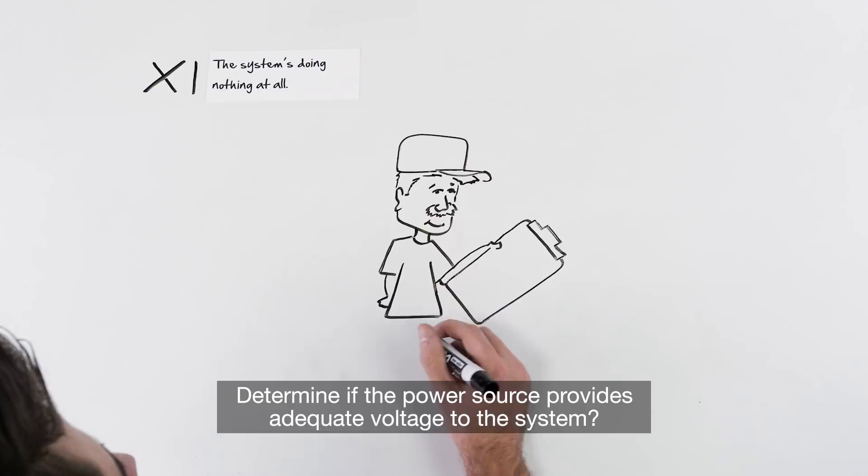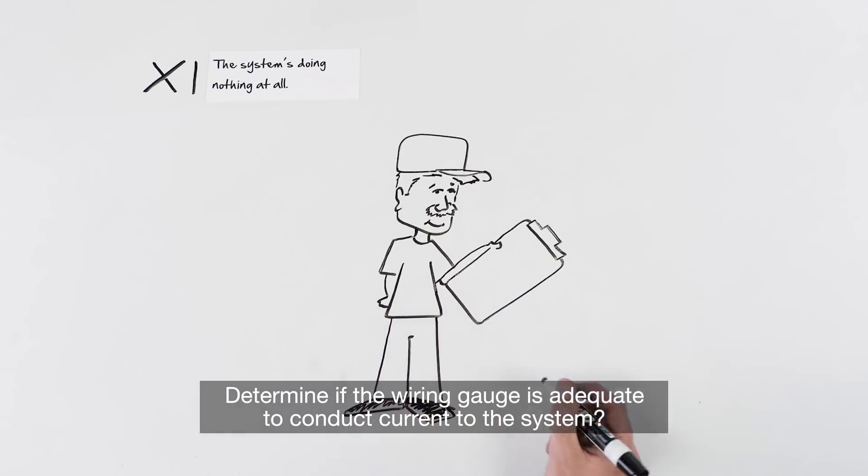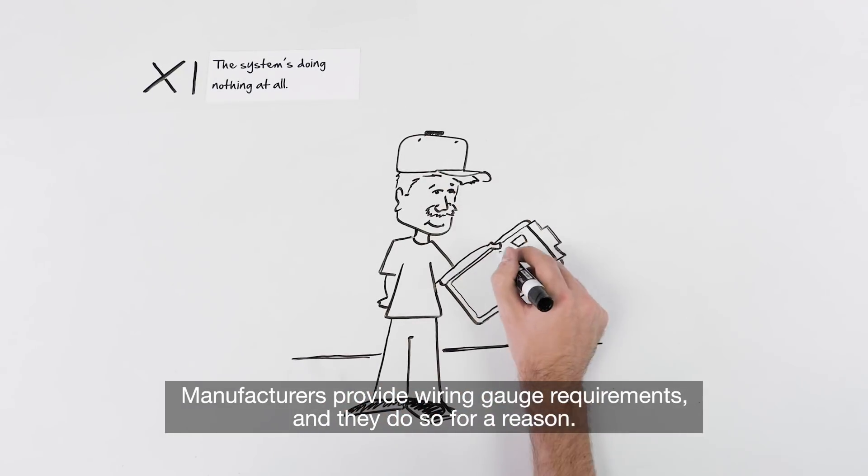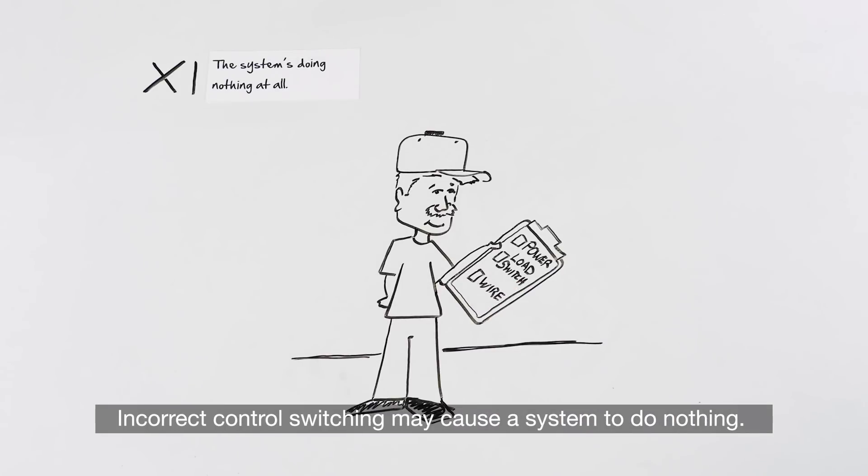Determine if the power source provides adequate voltage to the system. Determine if the wiring gauge is adequate to conduct current to the system. Manufacturers provide wiring gauge requirements, and they do so for a reason. Also, you may need to check to see how the control switches are configured. Incorrect control switching may cause a system to do nothing.